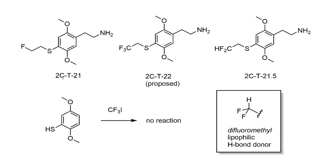The final compound made in the 2CT series was 2CT21, bearing a fluoroethyl chain, made by alkylation from the corresponding bromide. In the extensions and commentary, Shulgin discusses other fluorinated compounds he was thinking about but never made. He proposes 2CT22 as the trifluoromethylated version, and then — in typical whimsical fashion — realizes the difluoromethylated compound would be halfway in between and names it 2CT21.5. The difluoromethyl group is quite interesting: the fluorines are so electron-withdrawing that they render the hydrogen quite acidic, making it a hydrogen bond donor, but with a very lipophilic surface compared to something like an amino group.